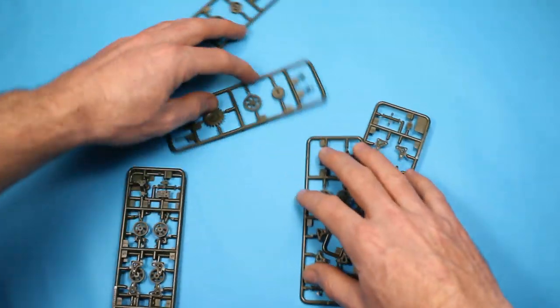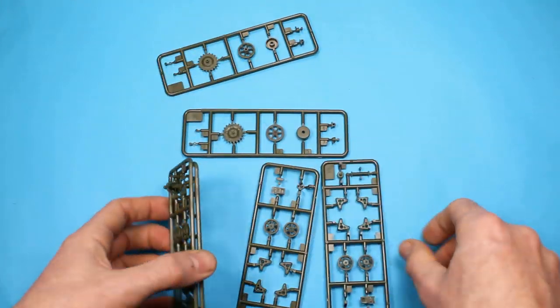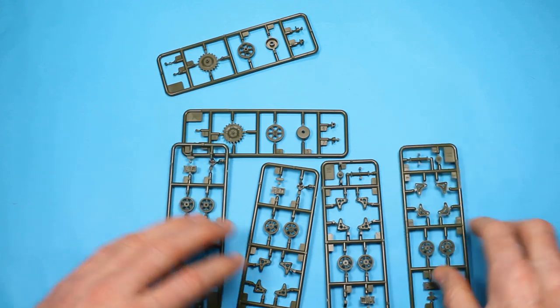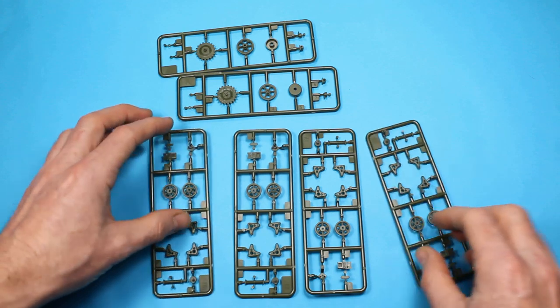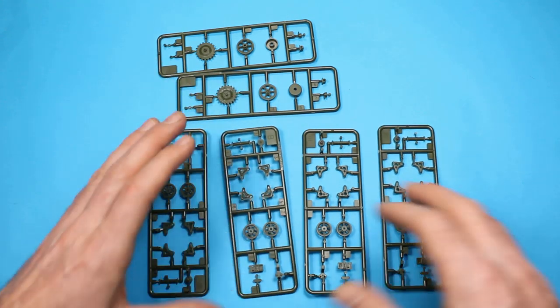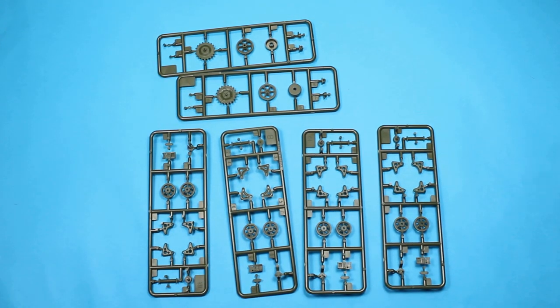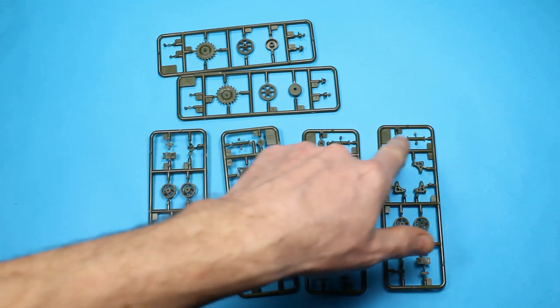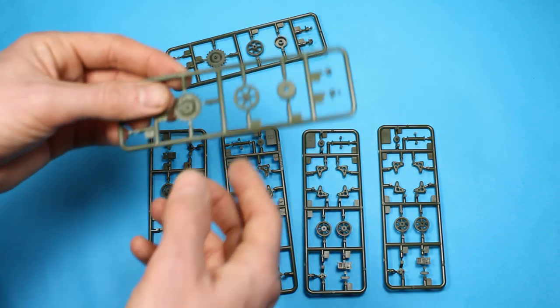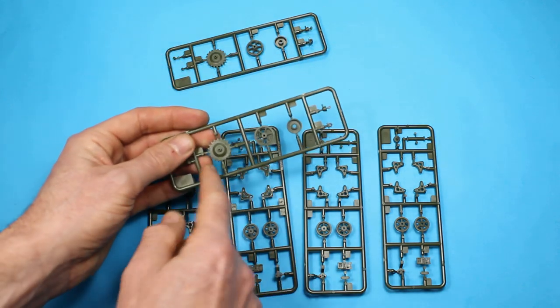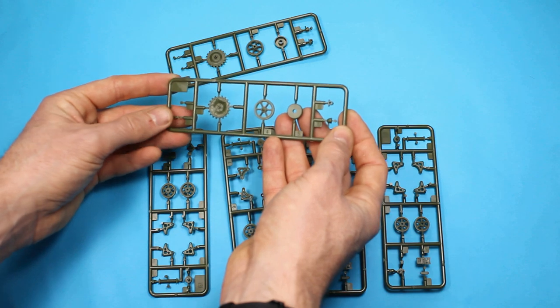Then we're on to the running gear. We've got sprockets and idlers, then four repeating sprues with the main wheels and bogeys. That's extremely crisp. We've got spring detail on each of these. There's no problems I can see, no ejector pin marks even on the inside of the sprockets.